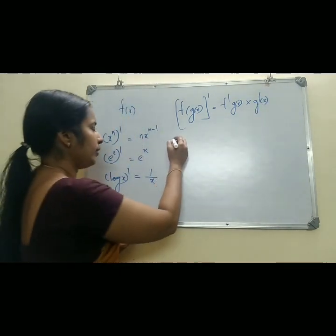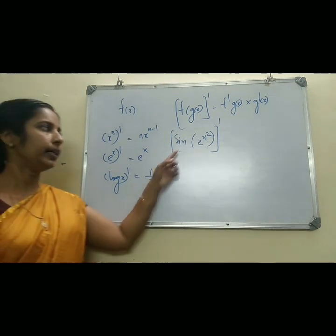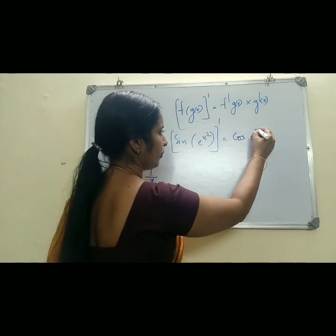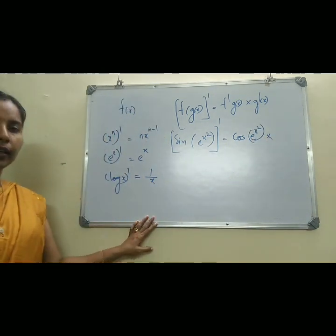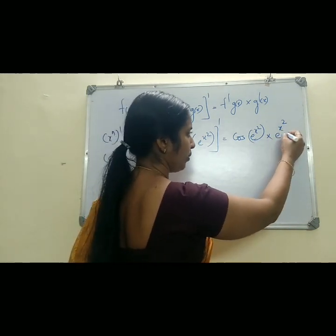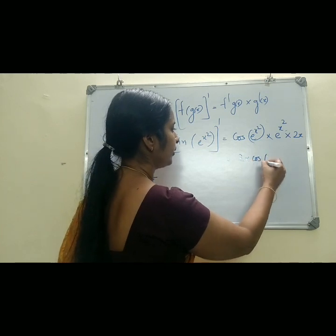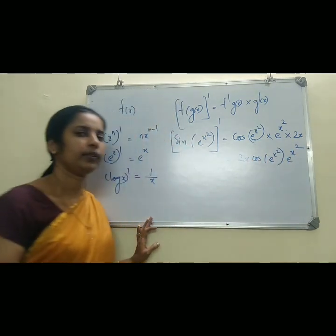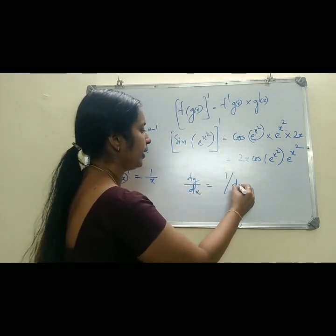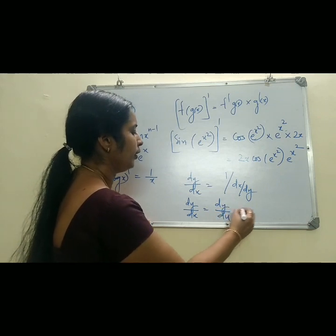For illustration, consider sin(e^(x²)). Suppose we wish to find the derivative of this function. Basically it is a sin function; derivative of sin(theta) is cos(theta). So in the place of theta it is e^(x²), giving cos(e^(x²)). Again, you multiply by the derivative of e^(x²). Derivative of e^x is e^x itself, so in the place of x it is x², and you multiply by its derivative which is 2x. So the answer is 2x · cos(e^(x²)) · e^(x²). This is the chain rule of differentiation. Also notice that dy/dx is 1 divided by dx/dy, and dy/dx equals dy/du multiplied by du/dx.